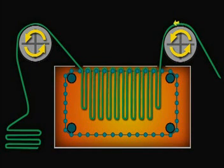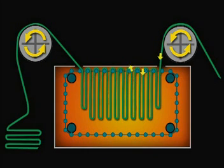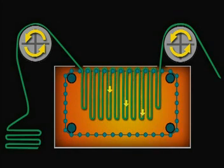Unlike a tenter frame, where the fabric passes horizontally through the machine, a loop dryer carries the fabric up and down around rollers so that fabric forms vertical loops as it passes through the dryer. Fabric spends more time in this dryer, but drying is more gentle because air velocities are lower than in a tenter frame.